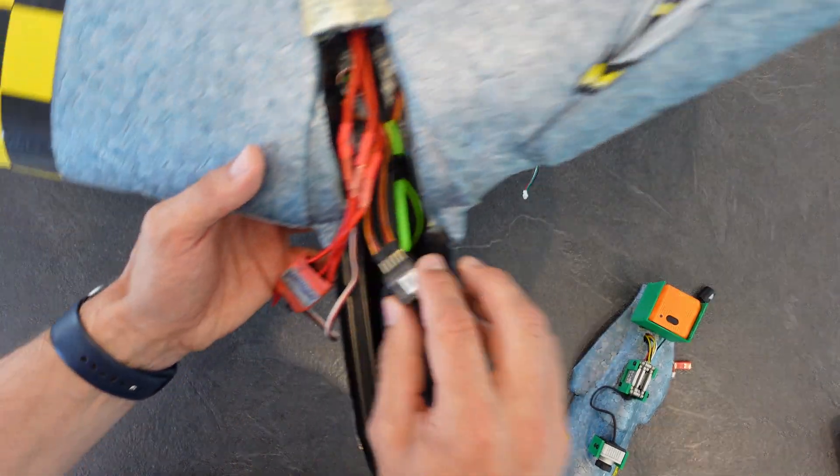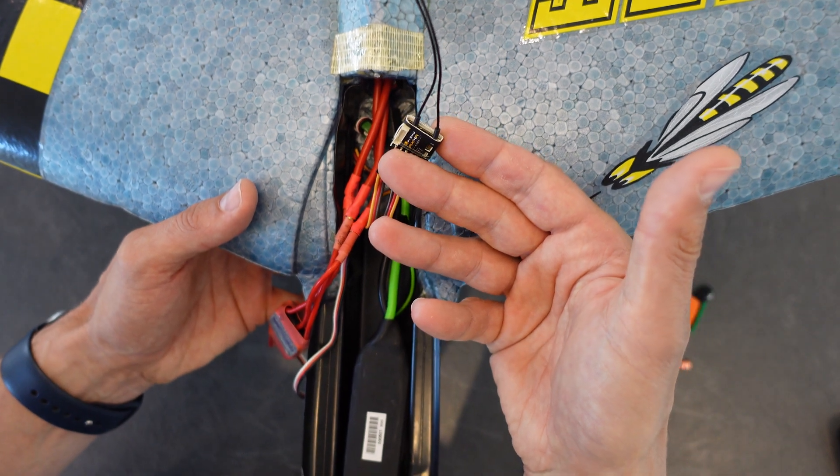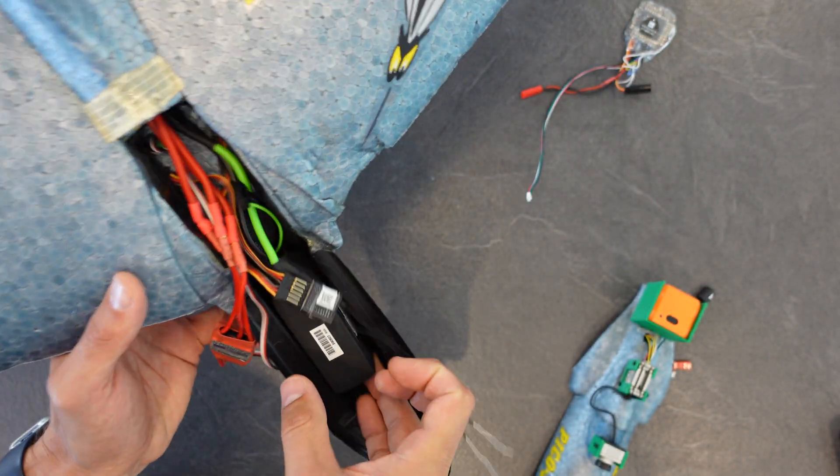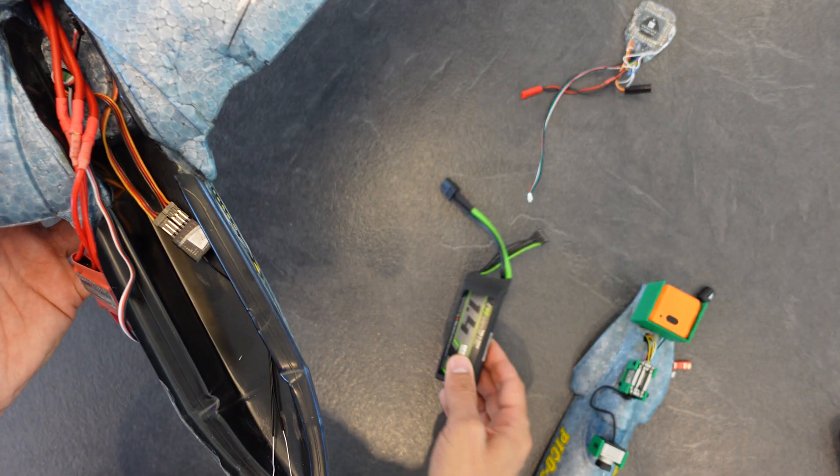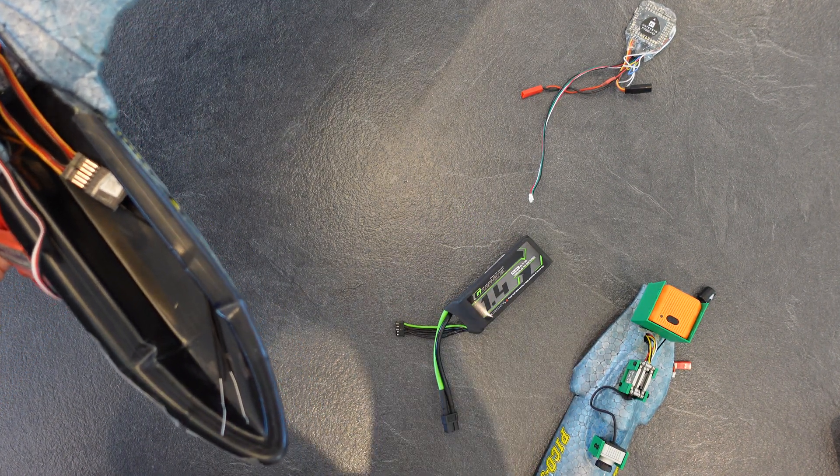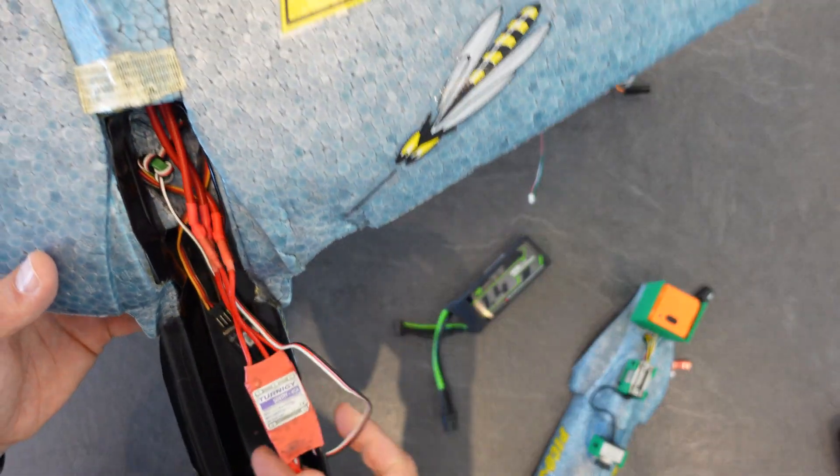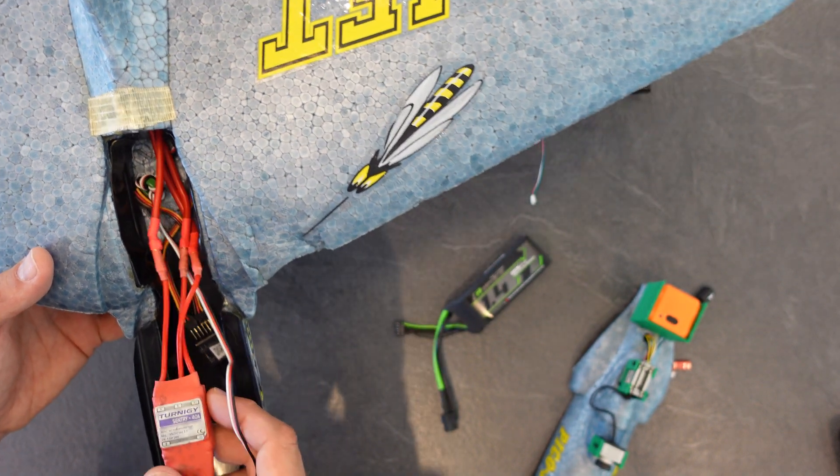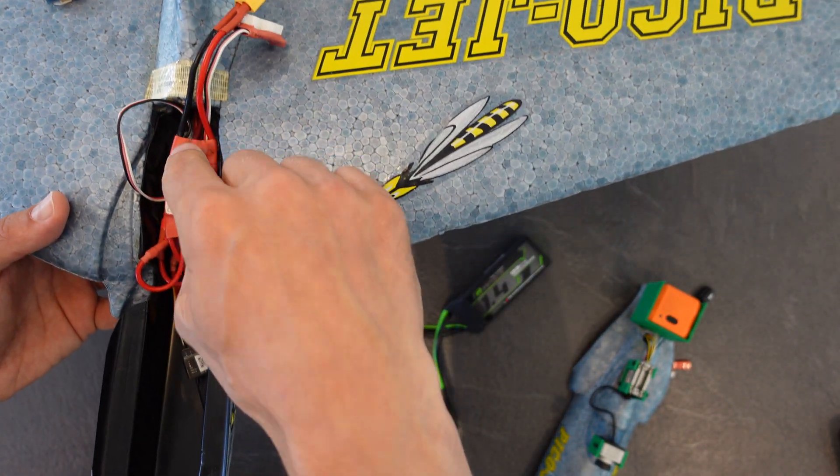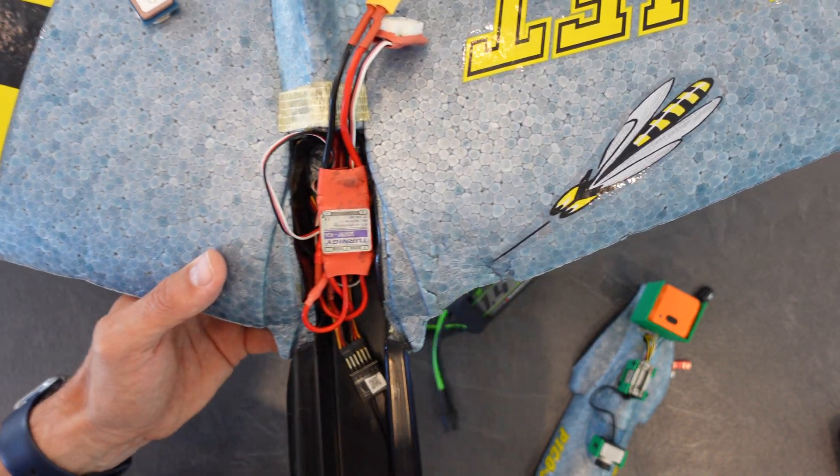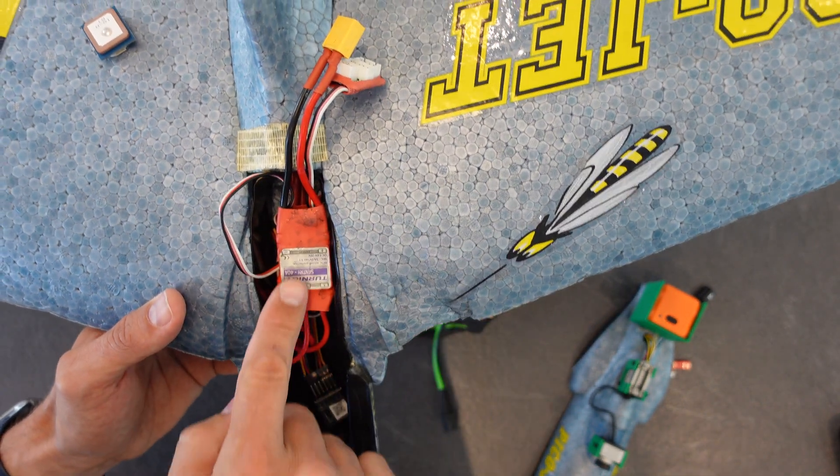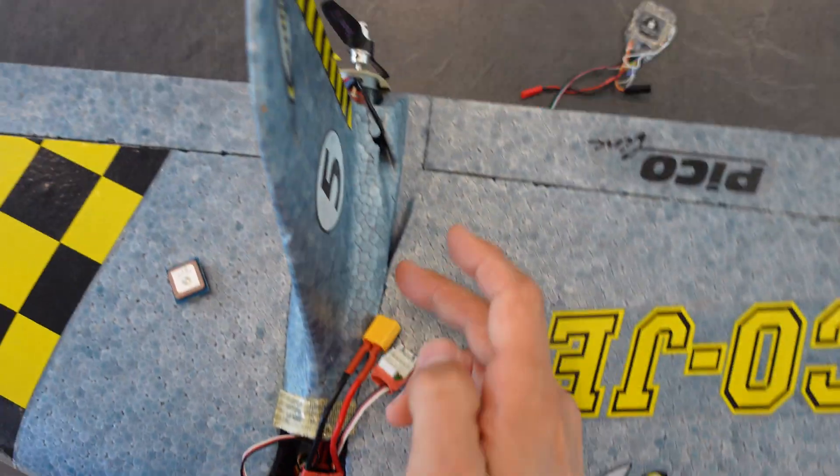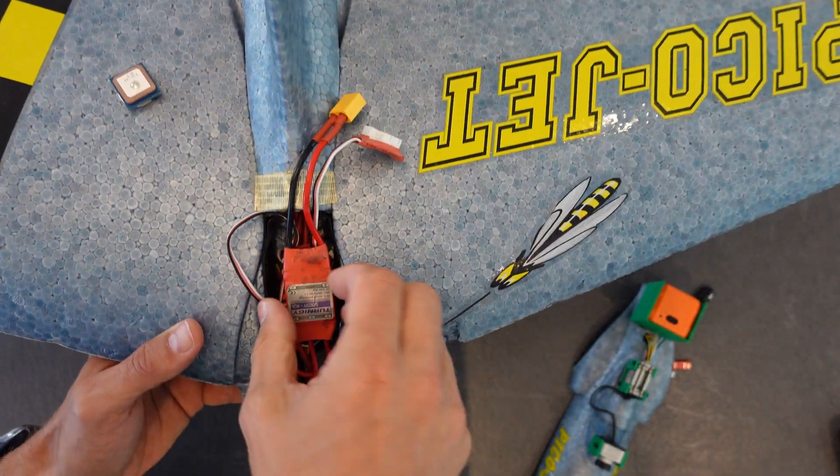Then we have the RX, just simple 4 channel receiver. The battery, 4S 1.4 and the ESC. Now, the ESC, I really messed it up because it's supposed to go here. So that the air that comes in here through these inlets are passing past the ESC and out through the hull and out through the back of the plane. It helps to cool it.